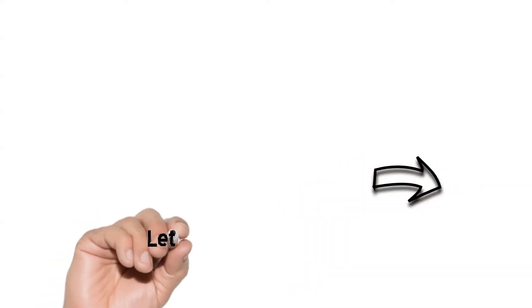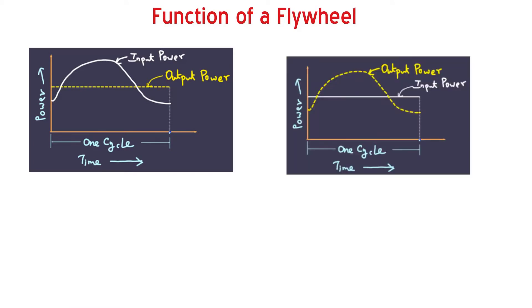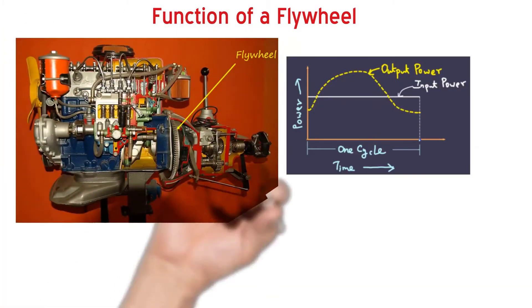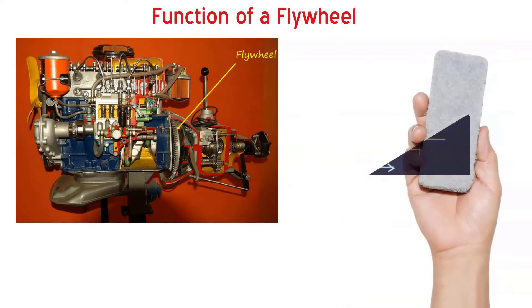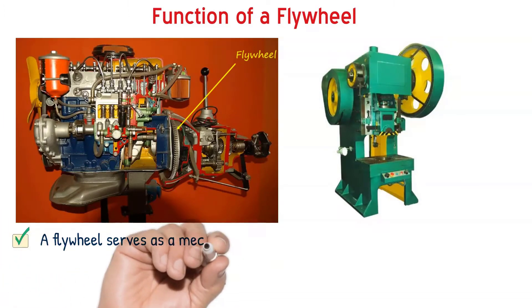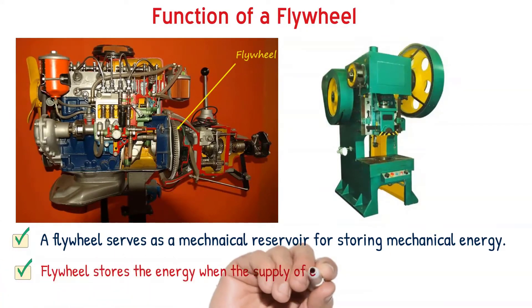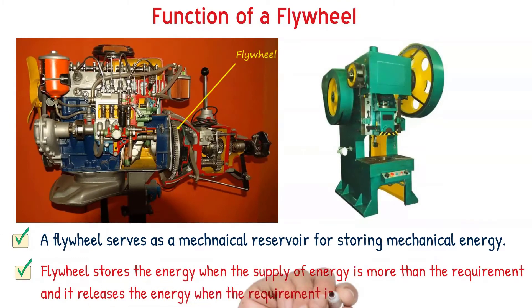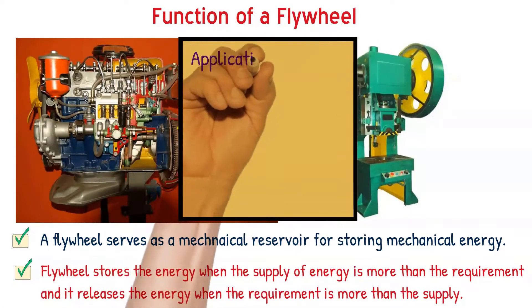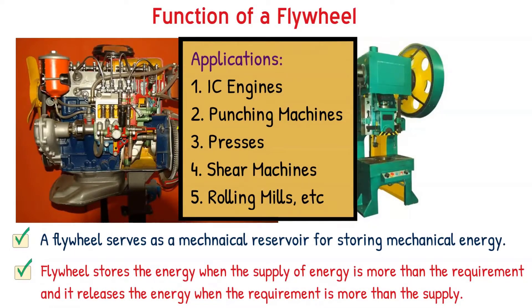Let us get started with flywheel first. Flywheels are used in machines in which there is a fluctuation either in the input power or output power. In case of an IC engine, input power will be fluctuating, whereas in punching presses, the output power required will be fluctuating. Those scenarios would require flywheels. Flywheels are a mechanical reservoir for storing mechanical energy. They are predominantly used in IC engines, punching machines, presses, shear machines, rolling mills, etc.